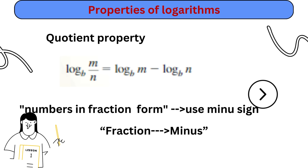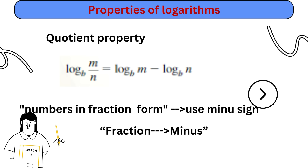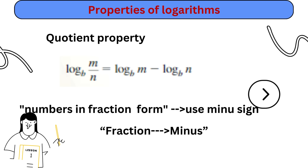Quotient property of logarithm: log of m over n to base b equals log of m to base b minus log of n to base b. Both m and n are in fraction form inside the log function; to separate them, use a minus sign. Remember the phrase: fraction form — use minus sign to separate the logs, like 'fraction minus.'